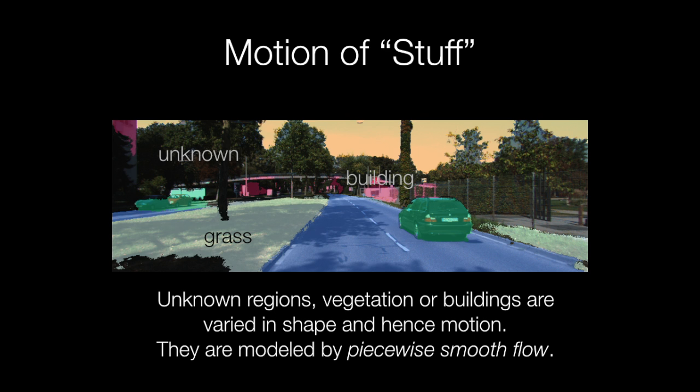Stuff are unknown regions, or regions that vary in geometry, and hence in motion, like buildings or vegetation. We model these with piecewise smooth flow.